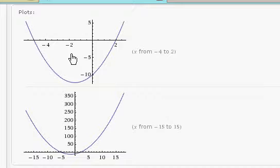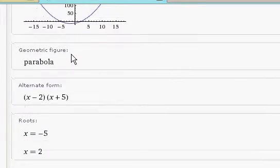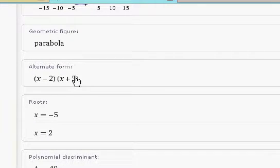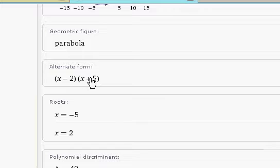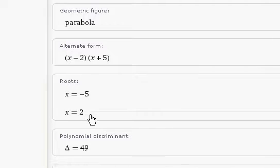And here are the parabolas. There's the alternate form. There's the roots. Notice that the root, in this case, is directly related to the alternate forms. If the root of x, that would be negative 5 and 2 here.